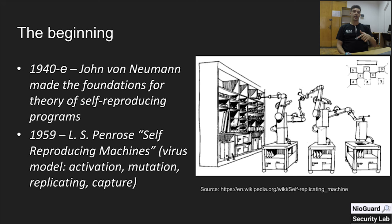This obfuscation or encryption is called mutation. Finally, in the capture phase, the found executable files are infected and the body of the virus is injected into the executable file. It can be injected into the beginning, the end of the file, or even the middle, correcting the header and the entry point of the executable file.